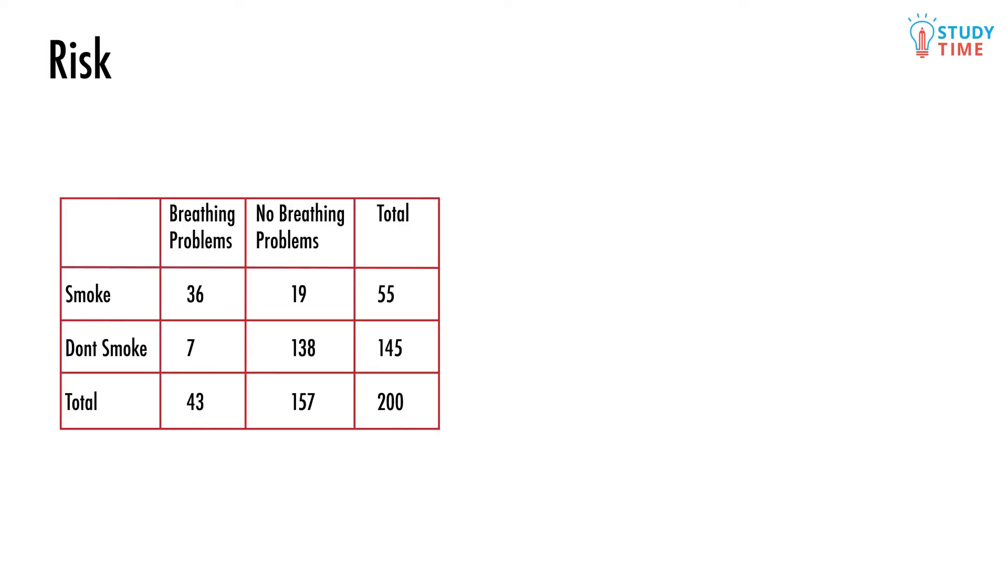The risk of something happening is pretty much identical to the probability of that thing happening. Let's take a look at a table that tells you about the risk of getting breathing problems if you smoke compared to if you don't.